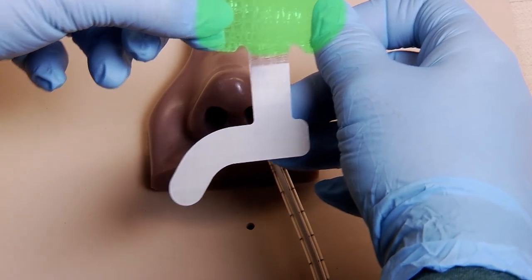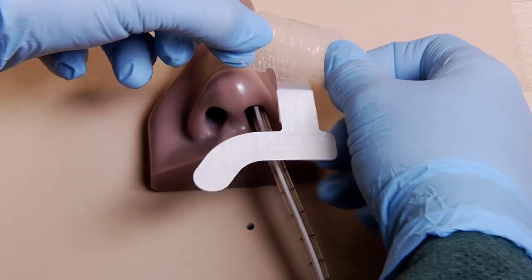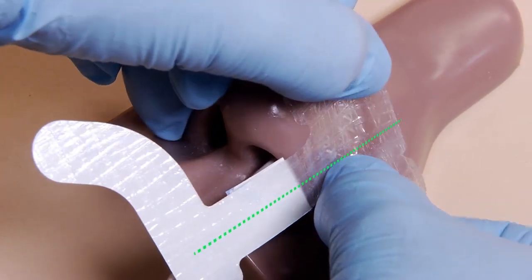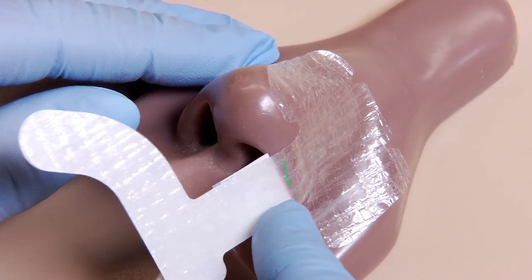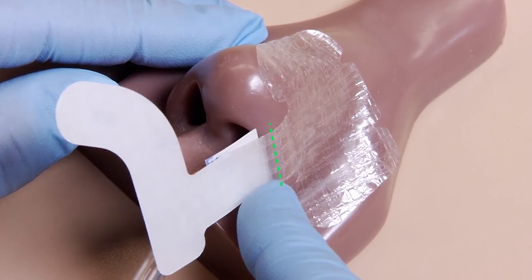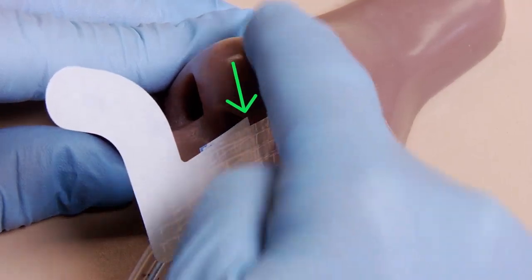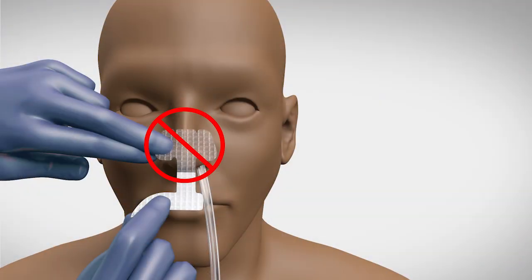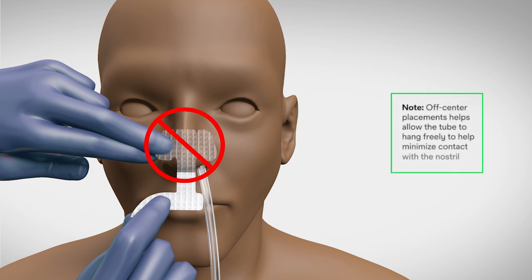You will place the elephant's ears on the side of the nose, where the tube is inserted, centered over the nair and tube. From a height perspective, the top of the non-adhesive section should be at the base of the nair. The presence of the bottom liner can help guide placement. Do not place the device on the center of the nose. Off-center placement and the non-adhesive section allow the tube to hang freely.